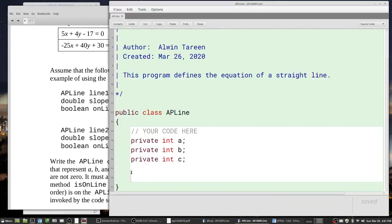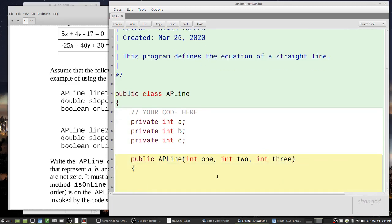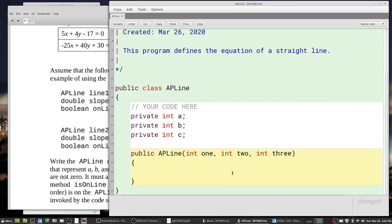So public APLine - now I need to decide on some names for these parameters. You could pick a bunch of things, but you just got to make sure you don't pick a, b, and c because that gets confusing. I'll just do int 1, int 2, int 3. You can basically pick anything you want, but one of the errors I see is that sometimes students put a, b, and c in here and it gets very confusing as to what's a parameter and what's an instance variable.